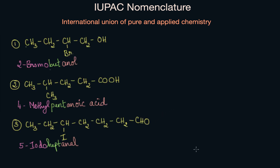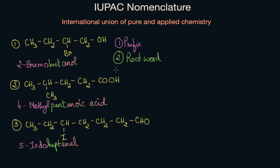Here I have some organic compounds with their IUPAC names. You can see that I have differentiated this nomenclature in three different colors — pink, green, and orange. This means the IUPAC nomenclature has three parts. The first part, written in pink, is called the prefix. The second part is the root word. And the third part is the suffix. These three parts are called the basic principles we need to know in order to name organic compounds.